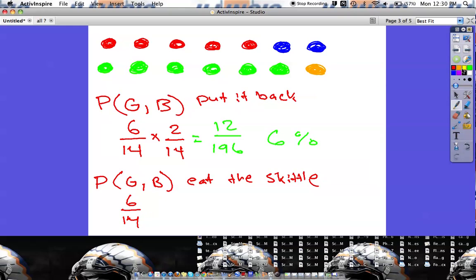So the probability of the green is still going to be the same. We still have a six out of fourteen chance. But now if we say we're going to eat the Skittle, that means that I didn't put it back in the bag. So now look what we have left for the next time we pull one out. We've only got thirteen Skittles left here.